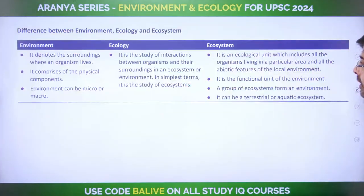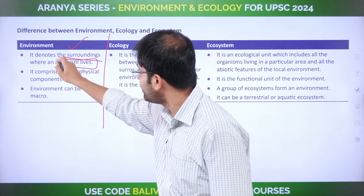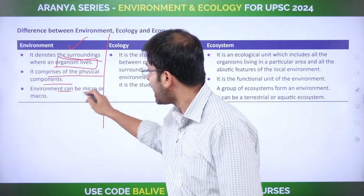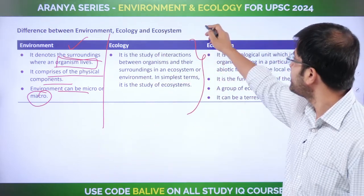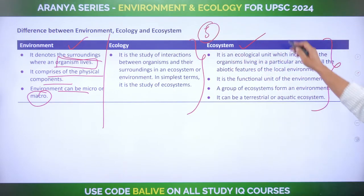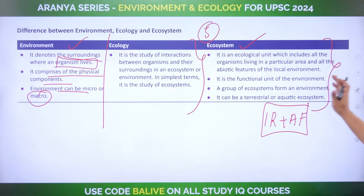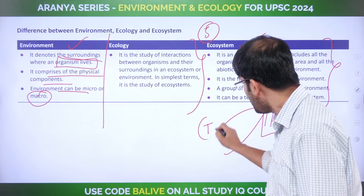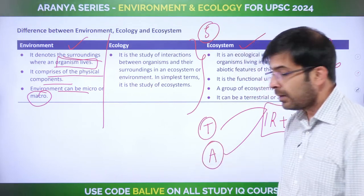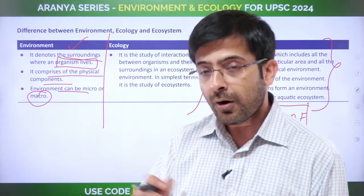The key differences: environment is the surroundings where an organism lives — it comprises the physical component and can be micro or macro. Ecology is the study of interactions between different stakeholders. Ecosystem is all of these interrelationships plus abiotic factors. Ecosystems are only of two types: terrestrial and aquatic.